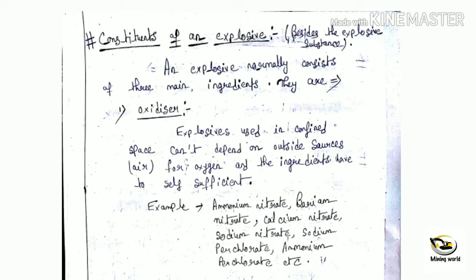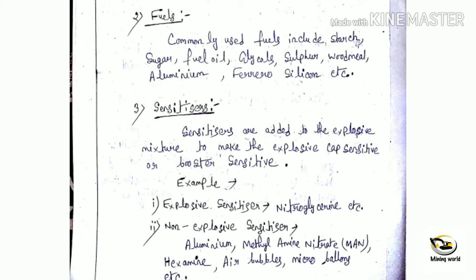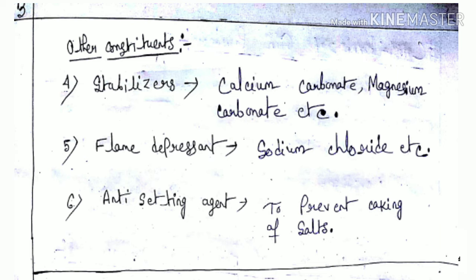Oxidizer is used to provide oxygen, which is necessary for the reactions carried out in the explosive. The next main ingredient is fuels; there are some examples commonly used as fuel in explosives. Next is sensitizers — sensitizers are added to the explosive mixture to make the explosive cap sensitive or booster sensitive. Examples of explosive sensitizers include nitroglycerin, and non-explosive sensitizers include aluminum, methyl amine nitrate, etc. Some other ingredients of an explosive are stabilizers, flame depressant, anti-setting agent, etc.